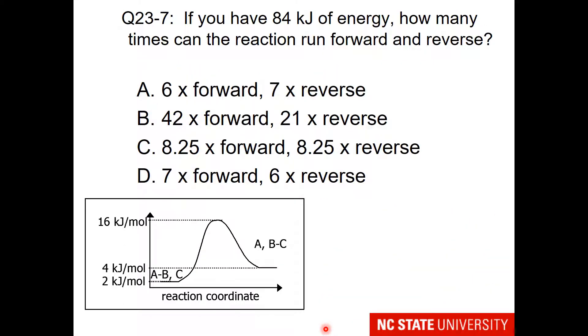Now I am asking you, if you have 84 kilojoules of energy, how many times can the reaction run forward and reverse? For those of you who might be confused, the times you can go forward would be 84 divided by your energy of activation forward from the previous question.